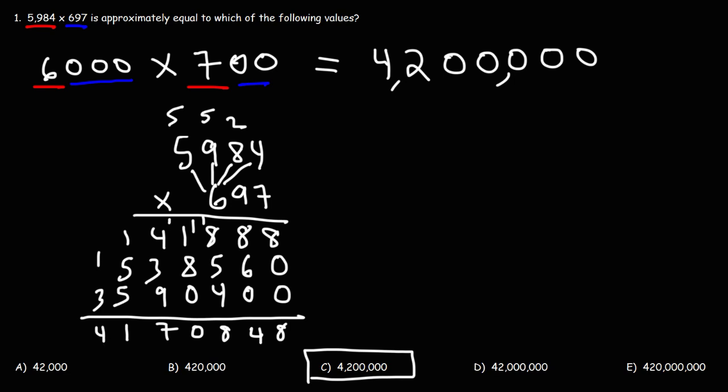So, this... Let's put the commas first. The exact answer is 4,170,848. But, this number, we could round that to the nearest million. So, that's approximately 4.2 million. So, the estimation works. It's not exact, but it leads to the right answer based on the options that were presented.